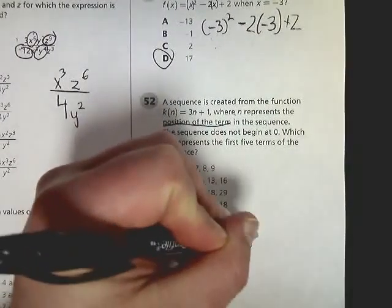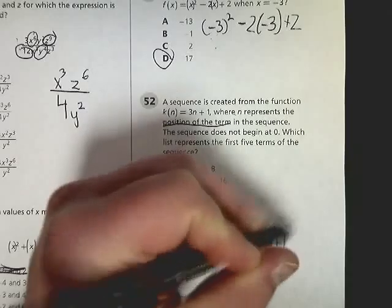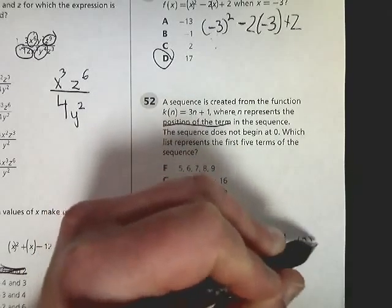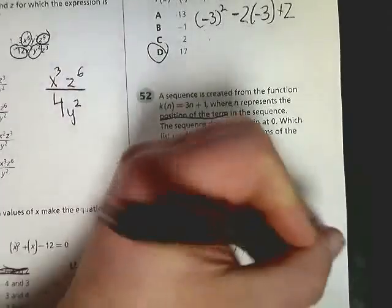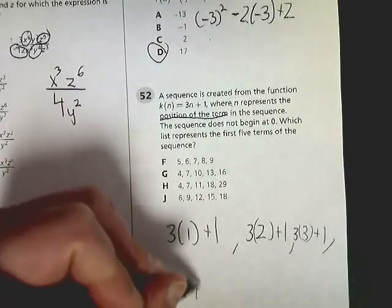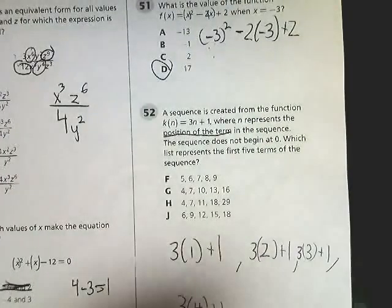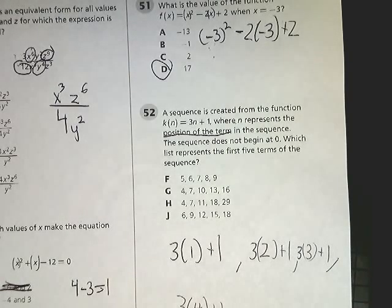The second term in sequence would be 3 times 2 plus 1, and then you do 3 times 3, and then you do 3 times 4, all the way to 3 times 5. So I'm just going to put the 1 in.